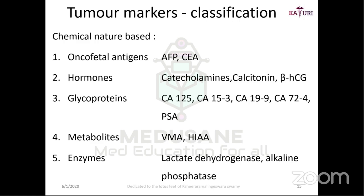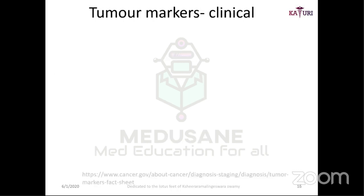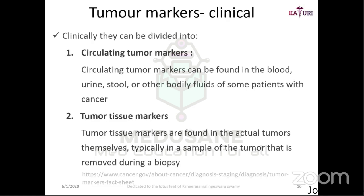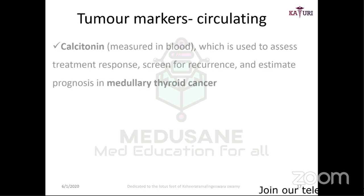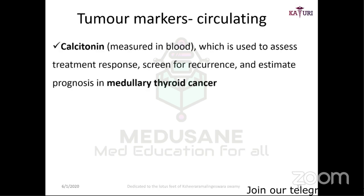Clinical classification divides tumor markers into circulating tumor markers and tumor tissue markers. Circulating markers can be found in blood, urine, stools, and other body fluids. Tumor tissue markers are very specific to the tumor itself and are not dispersed in blood. Examples of circulating markers: calcitonin for medullary carcinoma of thyroid, and CA-125 used to monitor treatment response in ovarian cancer.